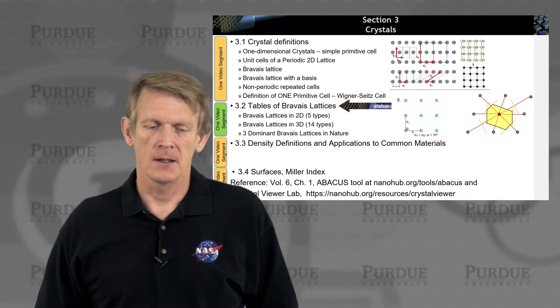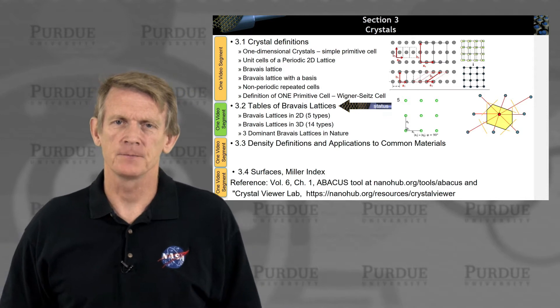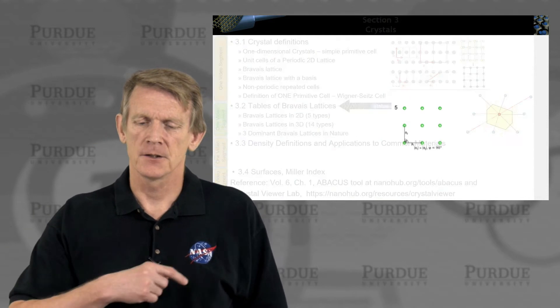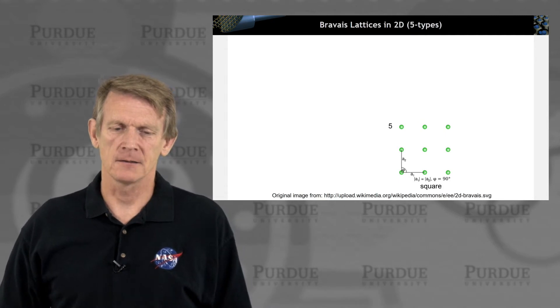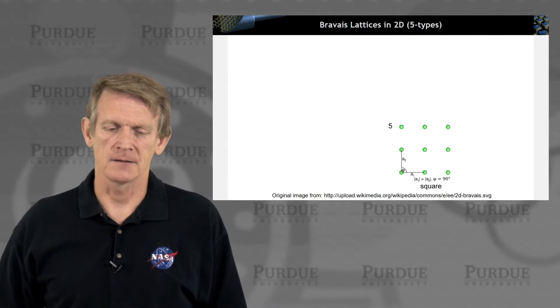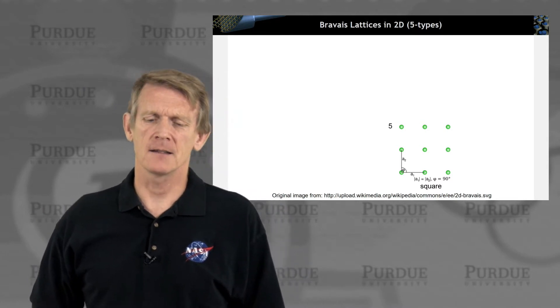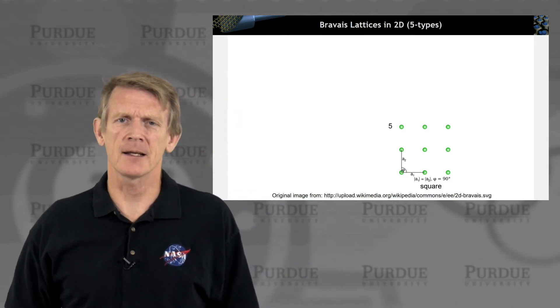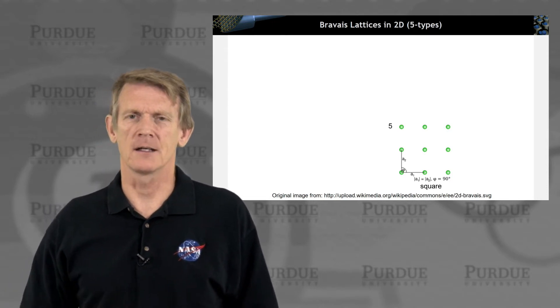I'd like to talk about 2D Bravais lattices first, and here's a very simple example of a perfectly rectangular or square, in fact, 2D lattice. The basis vectors A1 and A2 have the same length, and they spread an angle between them that's exactly 90 degrees. That makes a nice square.